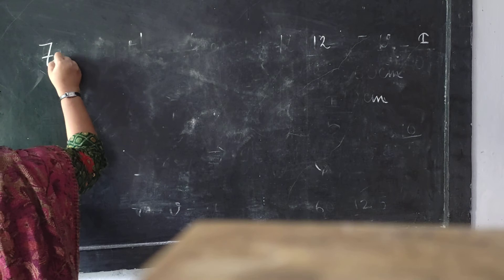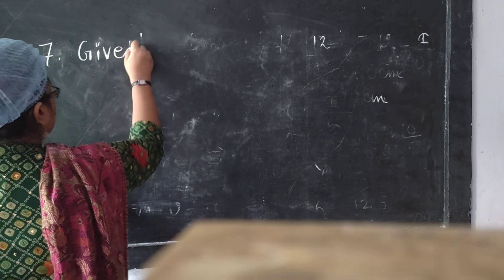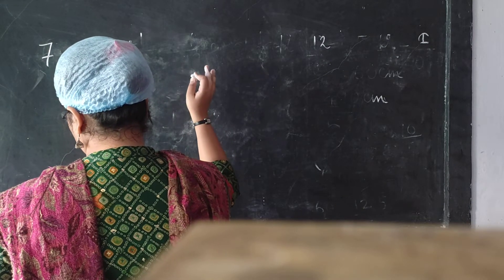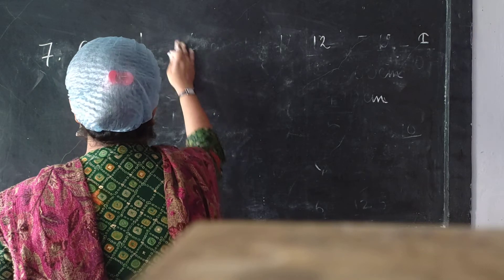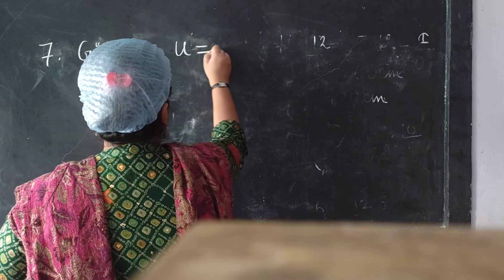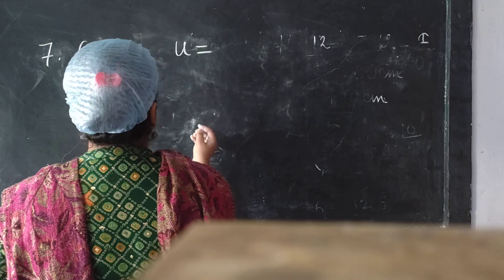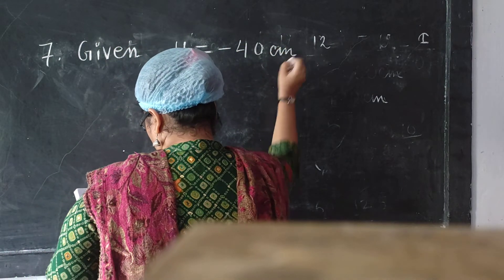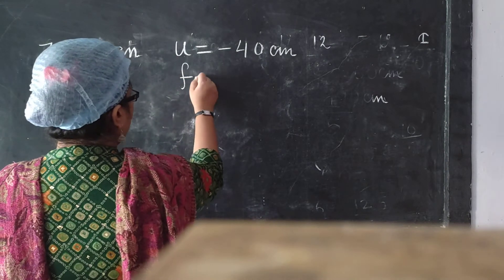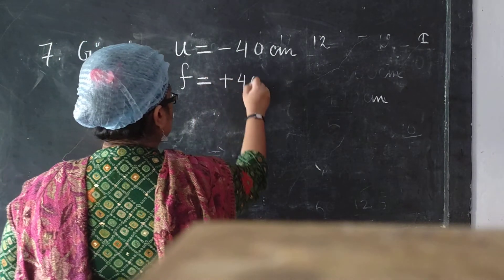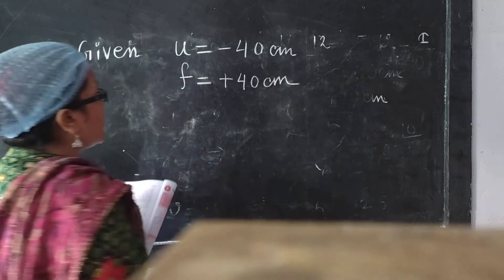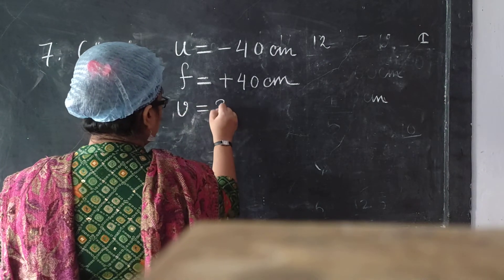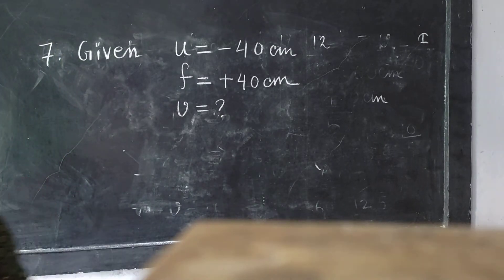Question number 7. Given: light source kept in front of a convex mirror at a distance of 40 cm. So u equals minus 40 cm, since it is a convex mirror and the object is in front. Focal length — it is a convex mirror, so focal length will be plus 40 cm. We need to find V, which is not given. Let's see what comes from the calculation.